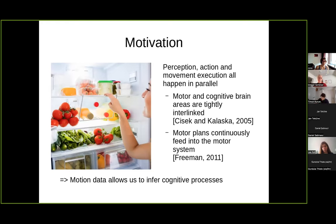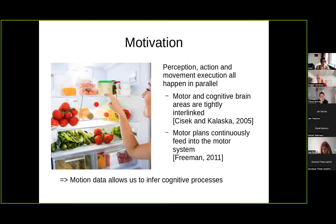We have neural evidence for that. We know that there are neural correlates of decision making in the motor cortex, and we also know that motor plans are actually feeding continuously into the motor system. Knowing that, we can say that if we have some process that we want to investigate, we can look at the movement trajectories and then try to infer what is happening.